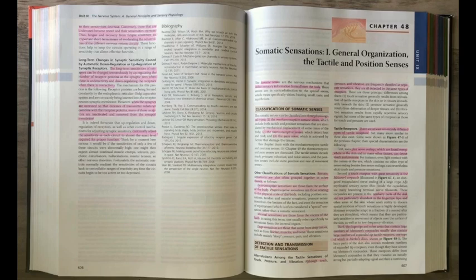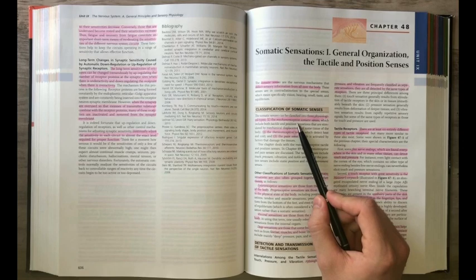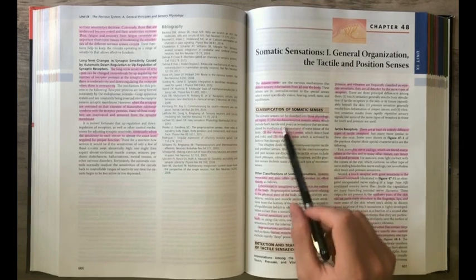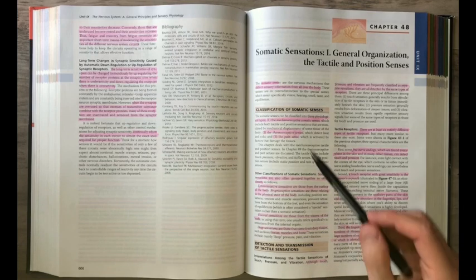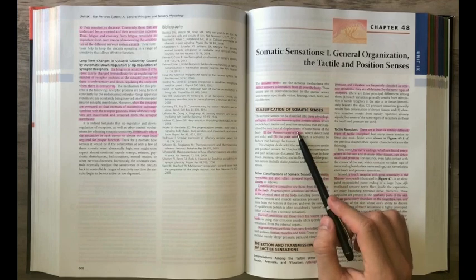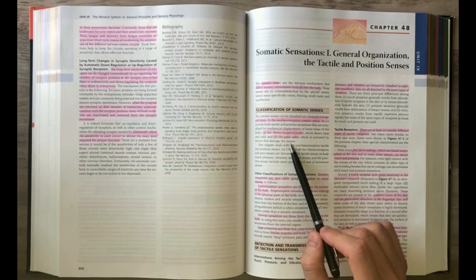It starts off by describing what a somatic sense is, and that's just the sensory information from around the body. We have three types of somatic senses: mechanoreceptive somatic senses which include tactile and position sensations, thermoreceptive senses for temperature, and our third one is our pain sense or nociception.